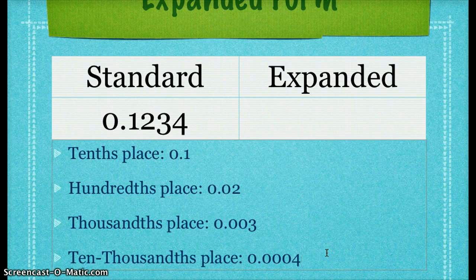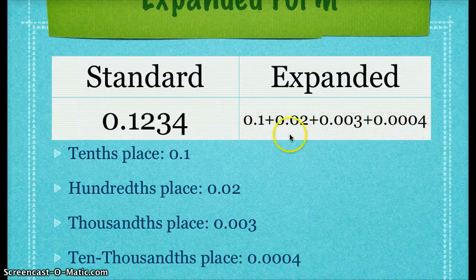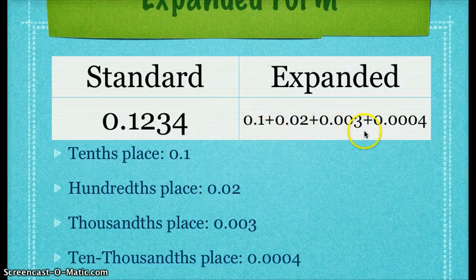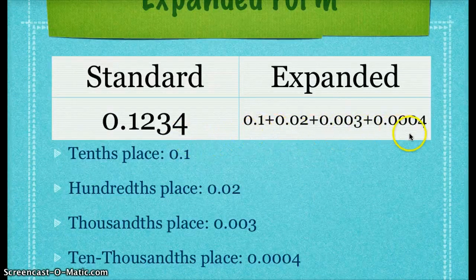So let's take a look in expanded form. All we're doing is adding all of these numbers together. You leave it added like this. You do not solve it. If you were going to add these numbers and solve it, we'd be back where we started and that wouldn't do us any good. So this is the expanded form.